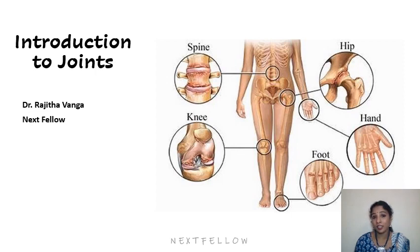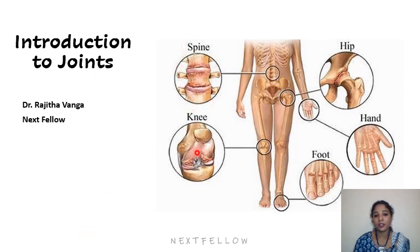This is a structural classification. In this image we can see a few examples: one is an example of a cartilaginous joint, the knee is an example of a synovial joint, and the foot is also a synovial joint. These are the varieties of joints you can appreciate here.